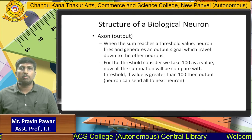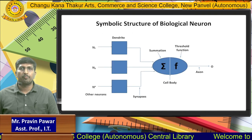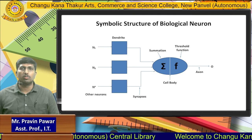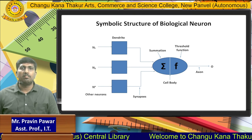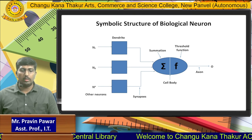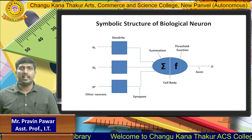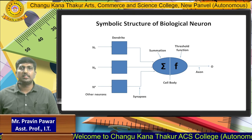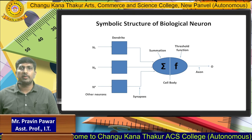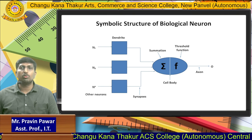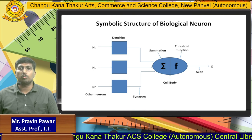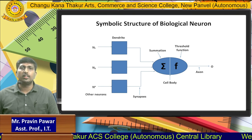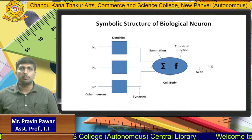This is the symbolic structure of the biological neuron, where N1, N2, and N are the input values. In the middle, we have the cell body which performs summation and threshold functioning to generate the output. The axon then provides the final output of that particular processing.